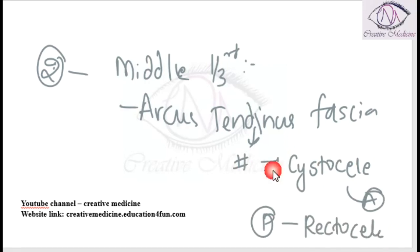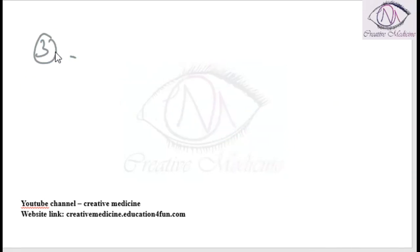Level 3 is the lower one-third of the vagina. Structures supporting the lower one-third of the vagina include the perineal body and the muscles attached to it.